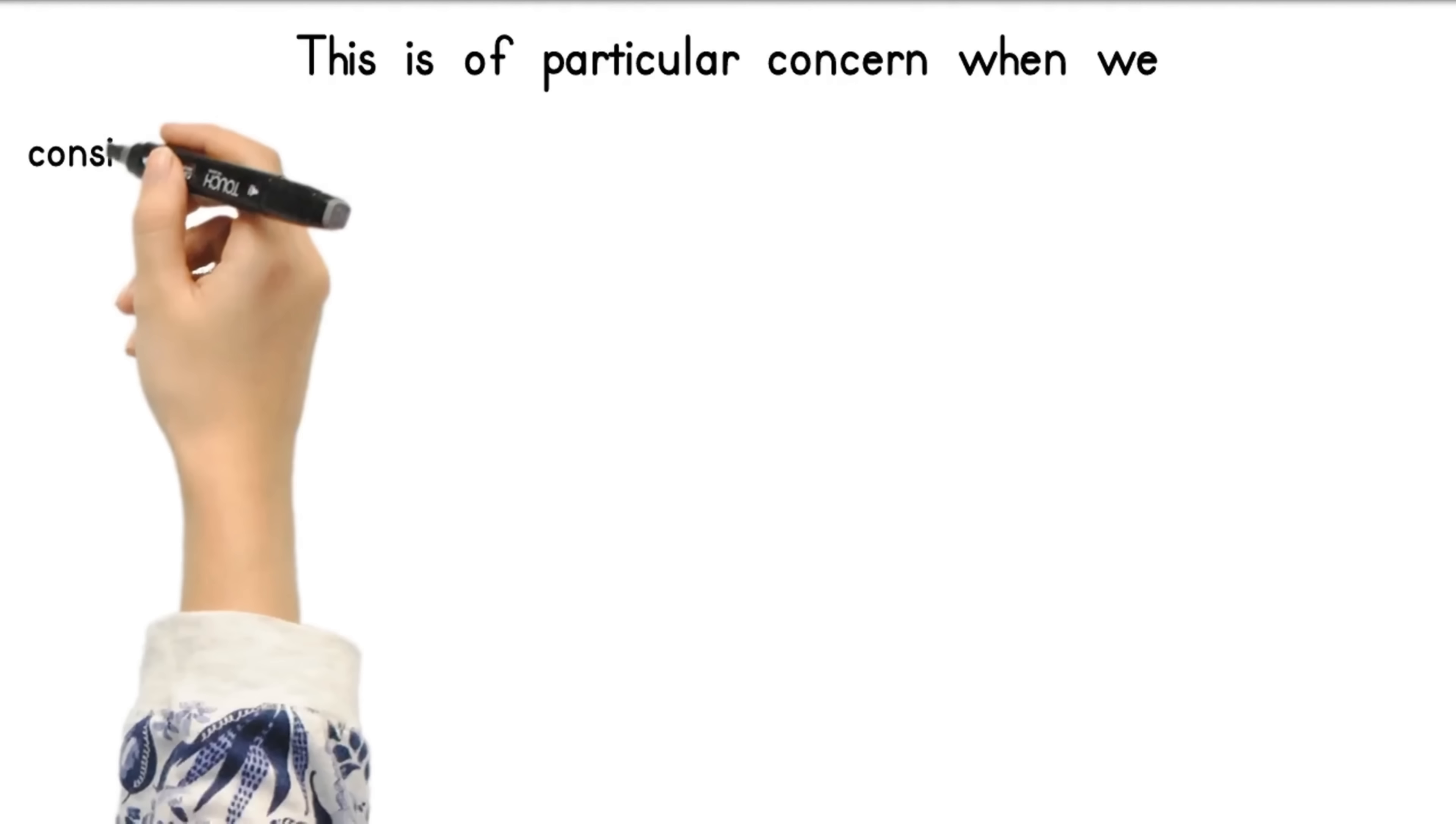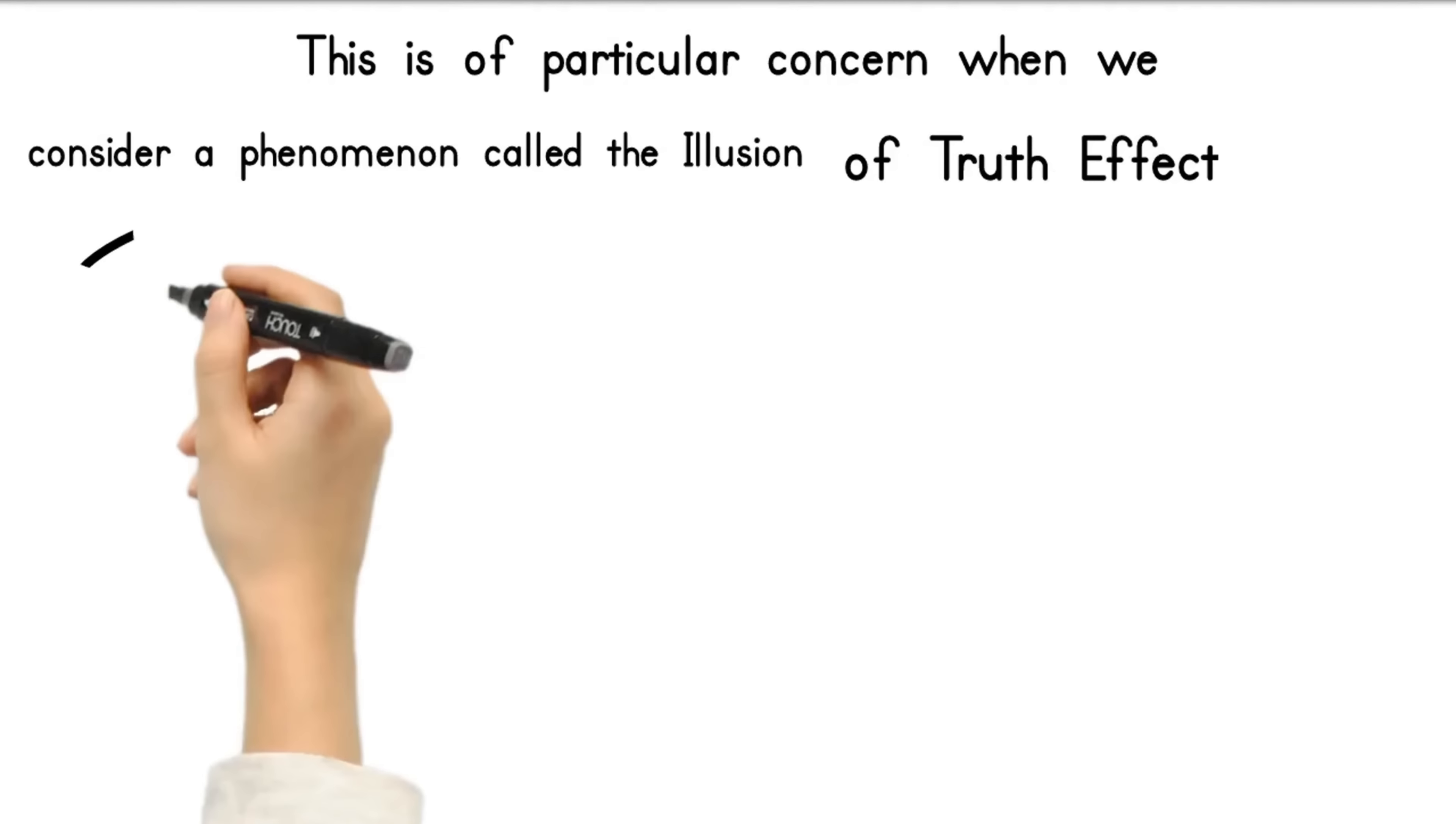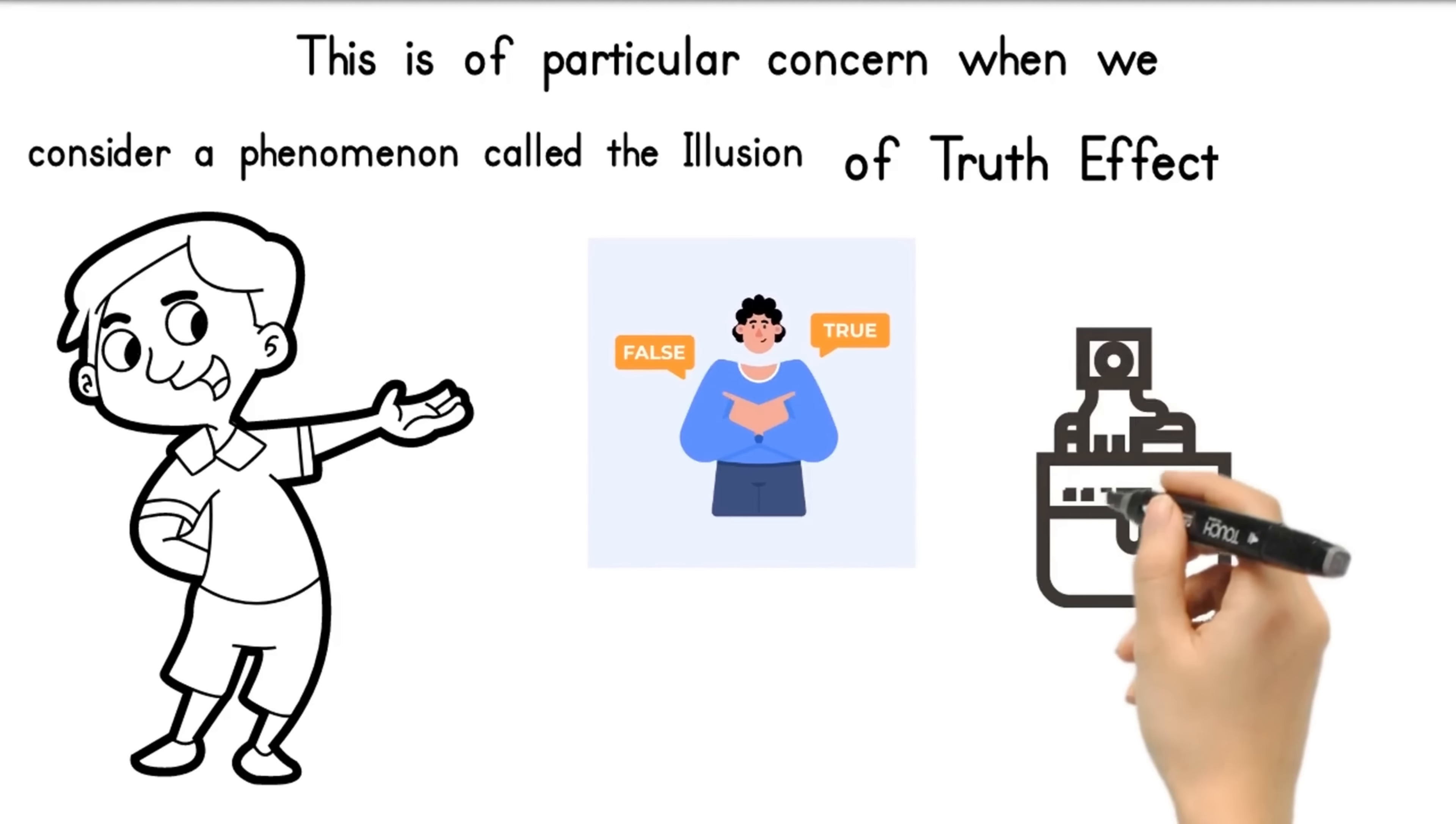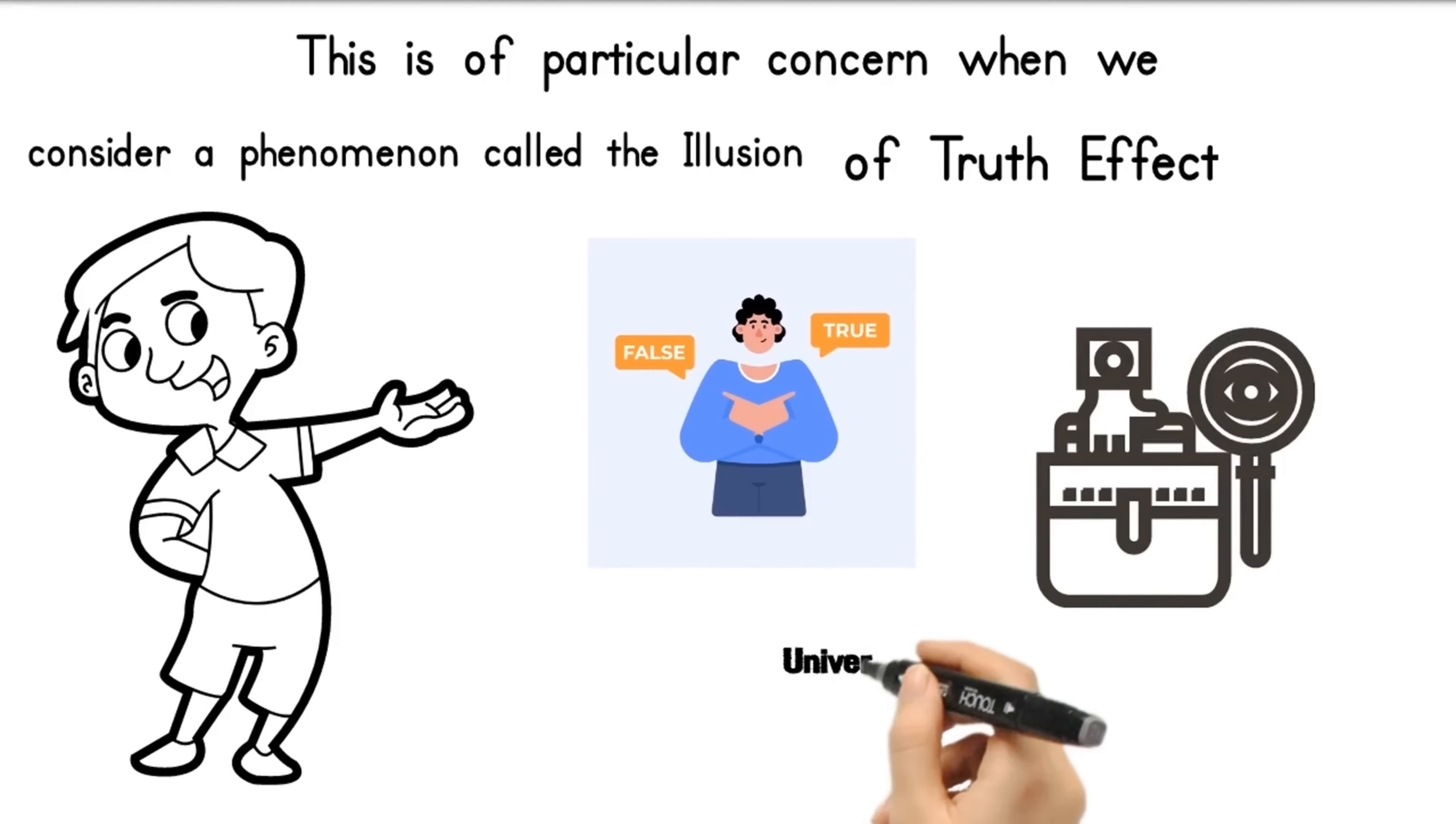This is of particular concern when we consider a phenomenon called the illusion of truth effect. It basically proves that any statement we read, see, or speak regularly is seen as more valid than one we're exposed to only occasionally. Amazingly, it makes no difference whether the information is true or false. The only thing that matters is how often we're exposed to it.